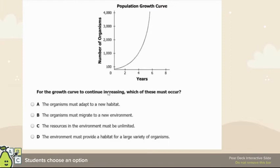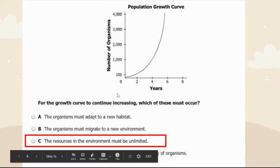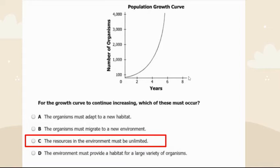Looking at this population growth curve — for it to continue increasing, it would need unlimited resources, which is not realistic. Any environment has a limit of resources. A real-life population growth curve would either go up and then come back down if going extinct, or look like an S when it reaches carrying capacity.